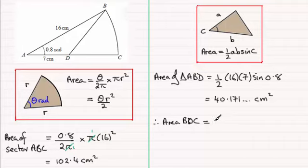102.4 centimetre squared, subtract the area of the triangle which was 40.171 and so on. Doing that subtraction you should find you get 62.228 and so on.